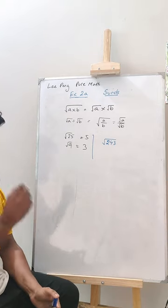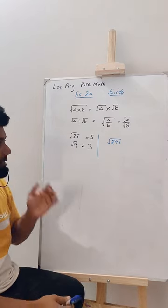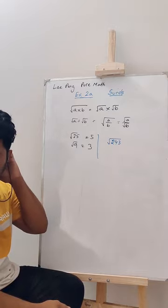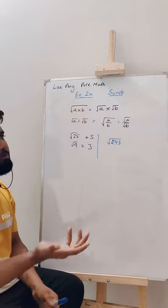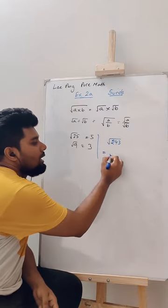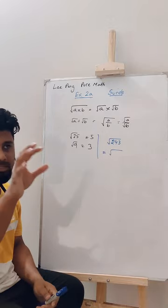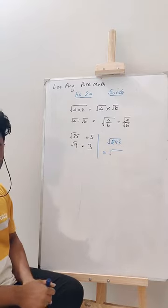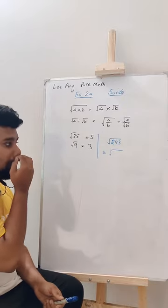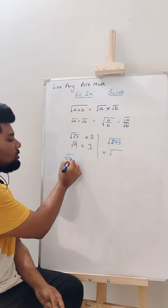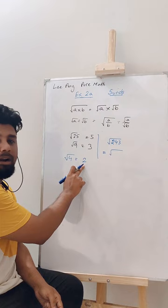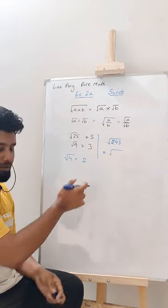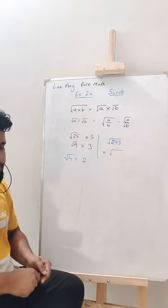How can we solve this? Root over 243 directly, we cannot have a direct answer. But how can we proceed? We have to first think, how can we represent this as a multiple of any of these? Root over 4 is the first number that gives a whole number answer. The answers I am writing in positive. Basically there are plus minus, but I am not going to that now.